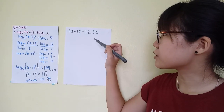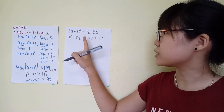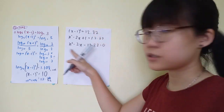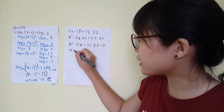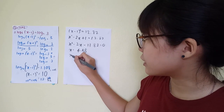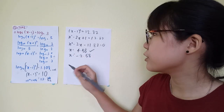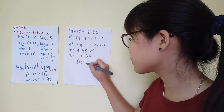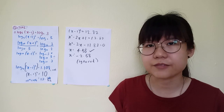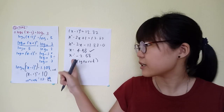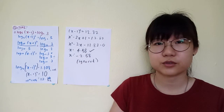Now solve like a quadratic equation: (x−1)² = 12.82, which expands to x² − 2x + 1 = 12.82. Move everything to one side and type into your calculator to get two values of x: x = 4.58 and x = −2.58. The negative answer is ignored because the logarithm of a negative number is undefined. So the final answer is x = 4.58.